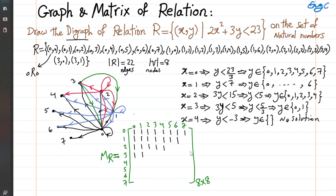The rest of the matrix entries are 0. The number of ones, if you count them, should equal 22 — matching the number of edges. So the size of the matrix is defined by the number of vertices: 8 by 8. The number of non-zero elements inside the matrix represents the number of connections or edges: 22. I hope this example is helpful.